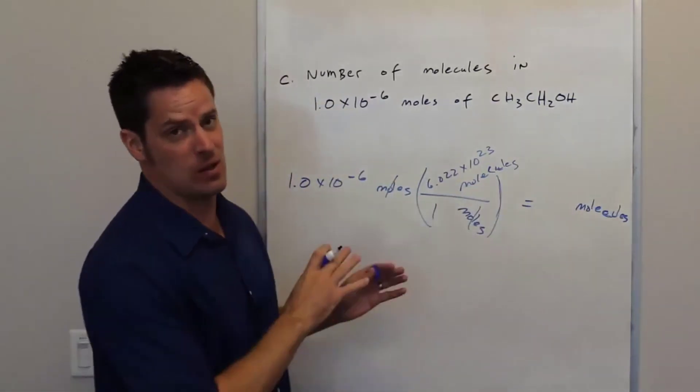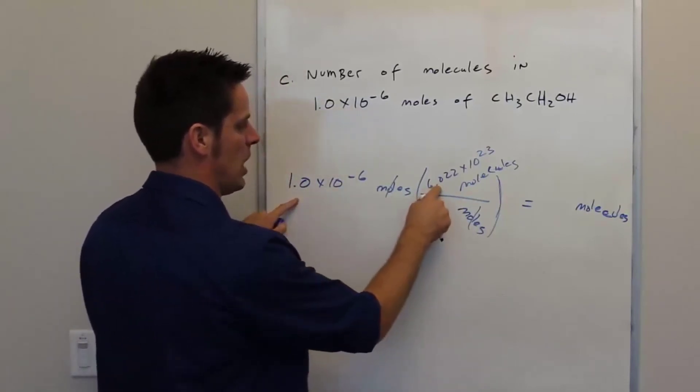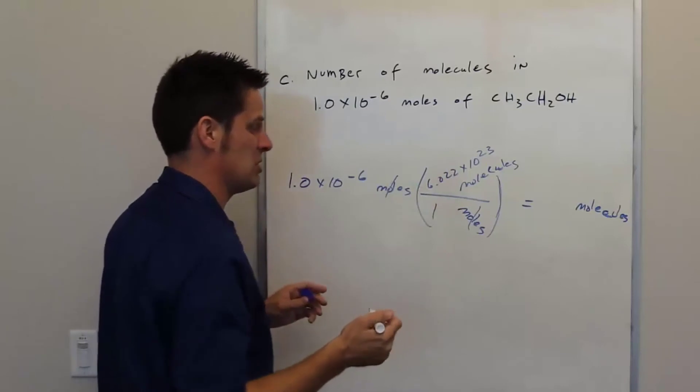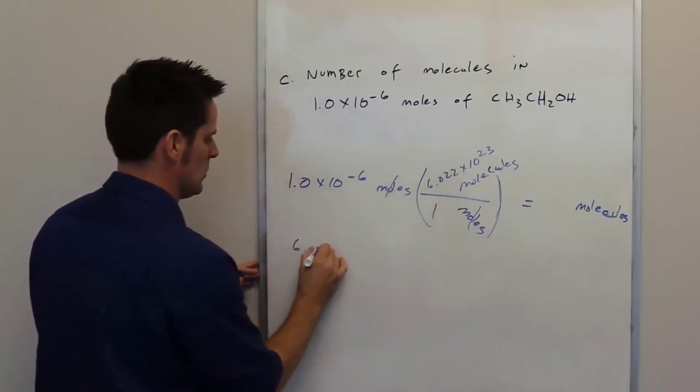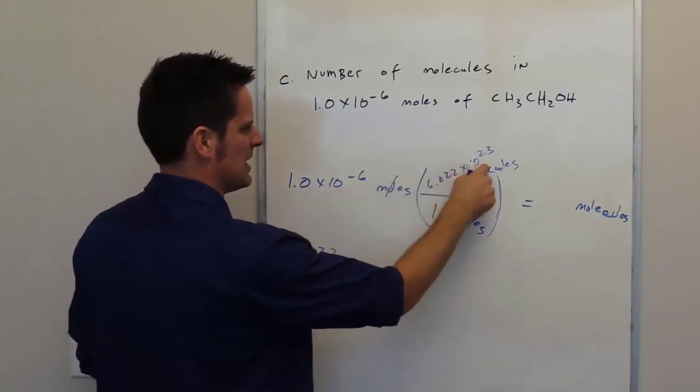One thing about the math, I know this math looks creepy, but it actually isn't too bad. 1 here times 6.022, 1 times 6.022 is 6.022, isn't it? What about this 10 to the negative sixth times 10 to the 23rd?